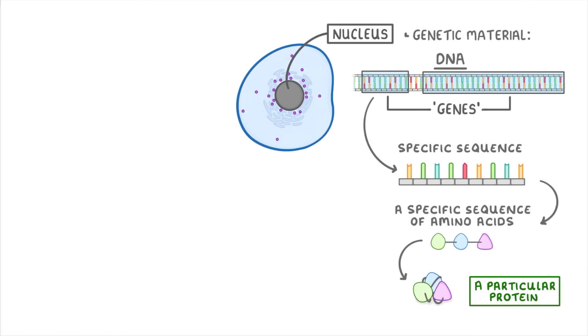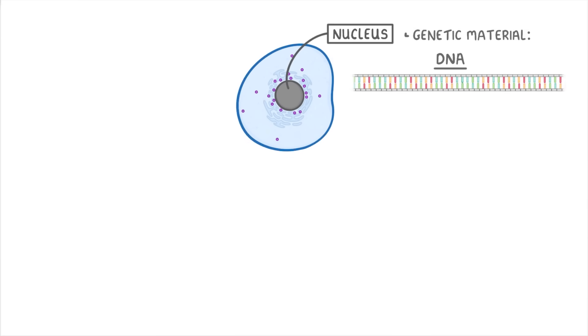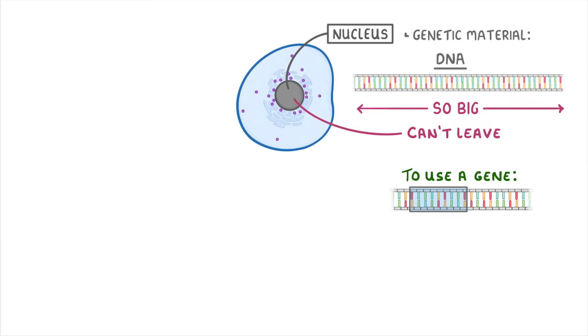In order to actually make a protein, the specific sequence of bases has to be read by one of these structures called ribosomes, which importantly are outside of the nucleus. However, because the DNA is so big, it can't leave the nucleus itself. And so if we want to use a gene to make a protein, we're going to have to make a copy of that gene first. And because we're only copying a single gene rather than the entire DNA strand, the copy will be small enough to leave the nucleus and make its way to the ribosome.